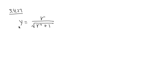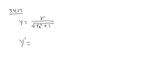3.4 number 27. We have the equation y is equal to r over square root of r squared plus 1. In this case, we don't have x, but r is just the same as x. I'm going to write down y prime. And by the look of this, this is going to be a quotient rule situation.